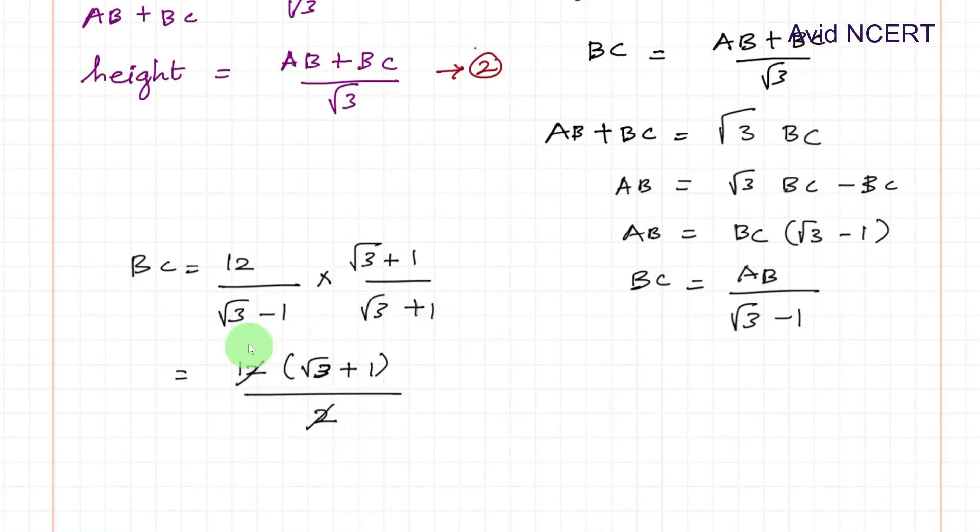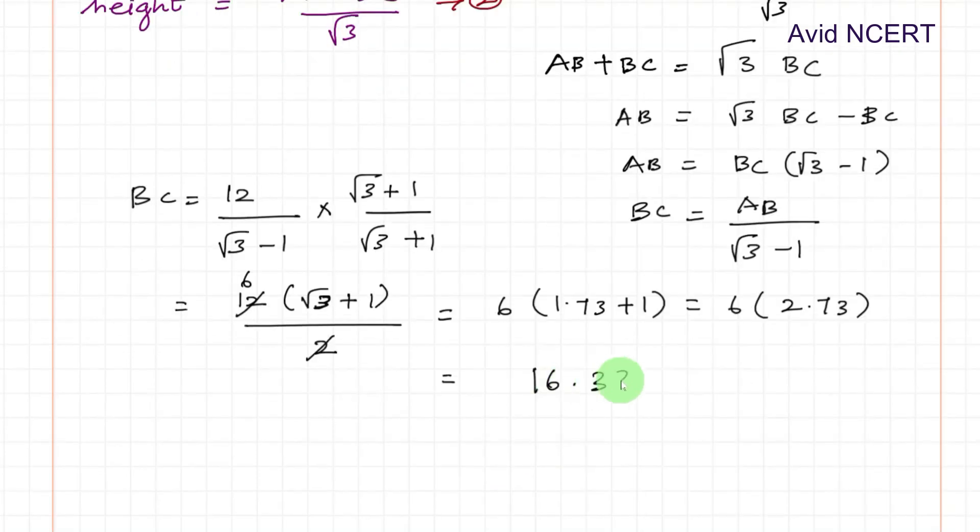This equals 2. So 2 times 6 is 12, which equals 6 into root 3 plus 1, which is 6 into 2.73, which equals 16.38, which is 16 minutes and 38 seconds.